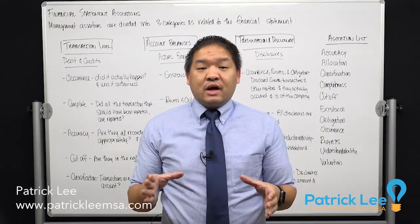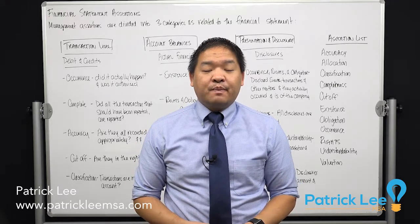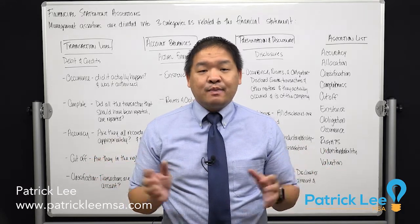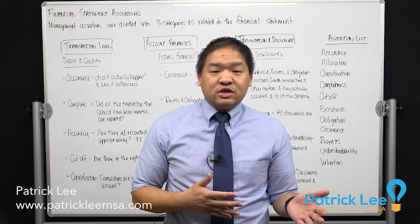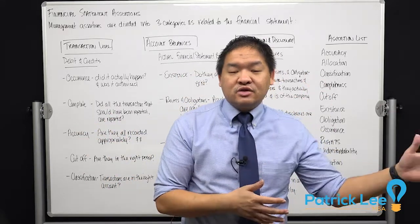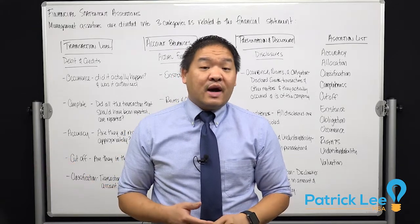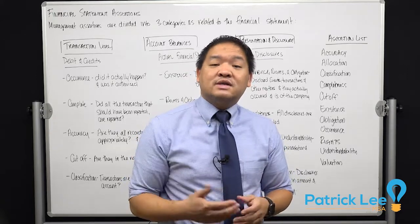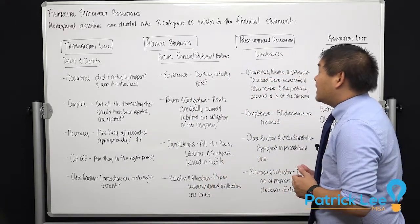In this lesson we are going to talk about management assertions — the actual assertions that we are going to be testing. We're first going to look at the three sections we're going to be testing, then we're going to look at all of the assertions, and then we're going to split those assertions into the three sections. Management assertions are divided into three categories as they relate to the financial statement.